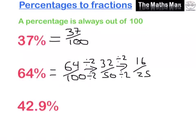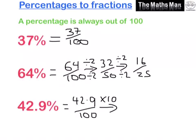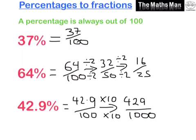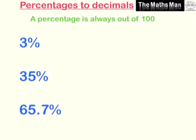If we have a decimal in our percentage, it's still the same thing — 42.9 out of 100. But we don't normally have decimals in a fraction, so we times the top by 10 and the bottom by 10, giving us 429 over 1000. Just remember to always put the percentage over 100.